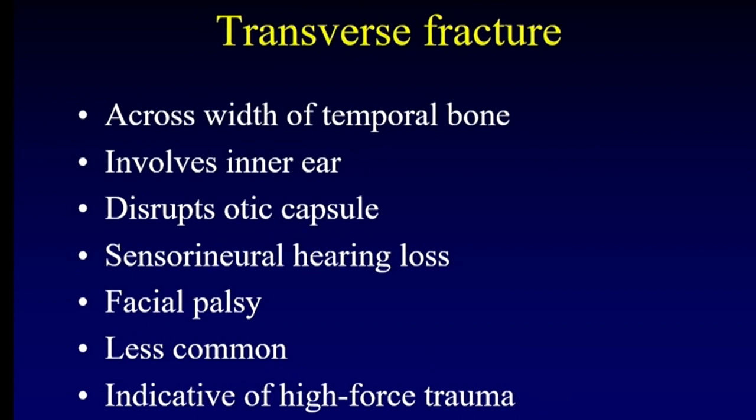Transverse fractures, on the other hand, run across the width of the temporal bone. They tend to involve the otic capsule and disrupt the inner ear. When I say otic capsule, I'm talking about the bony inner ear. Transverse fractures tend to cause sensorineural hearing loss because they've disrupted the inner ear. They too tend to cause facial palsy — so you don't get away from facial palsy with either fracture type. Transverse fractures are less common because they require high force trauma.